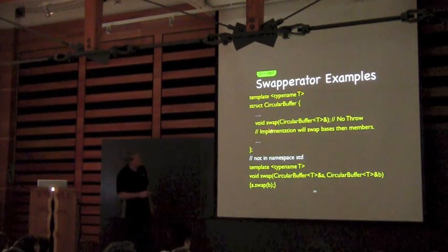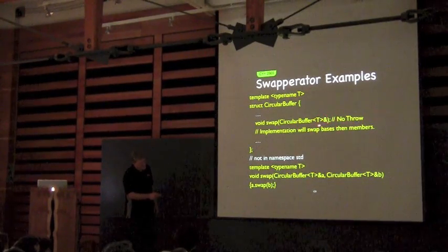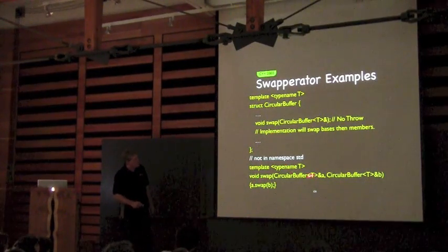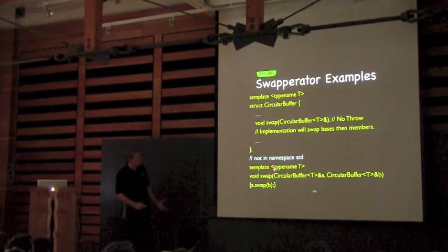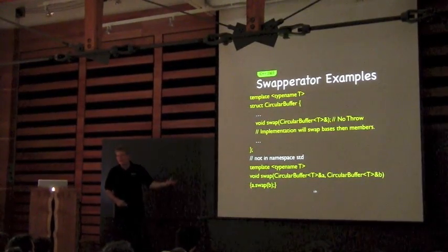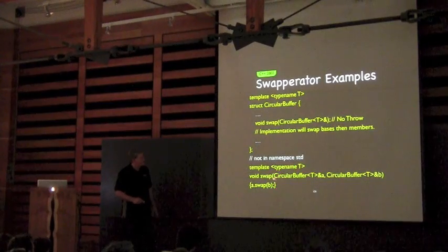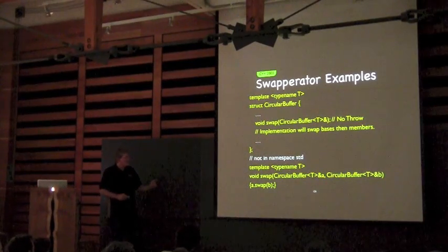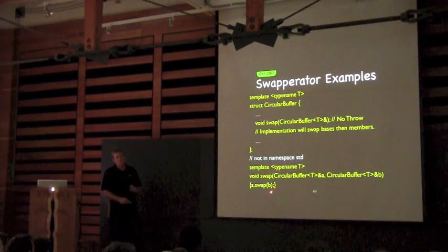Here's another example — this time it's a template. I write a member that does the templated swap, no-throw but not using the dynamic exception specification — it's documented to not throw. Notice the two-parameter free function version is not in the standard namespace. Why not? Because this is not a specialization — it looks like a partial specialization, but partial specialization isn't available for function templates in C++. So this is an overload, and it's legal for me to overload things but only in my own namespace.